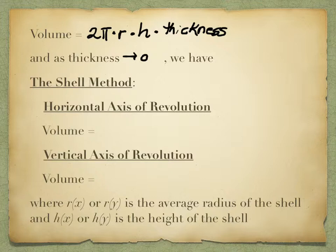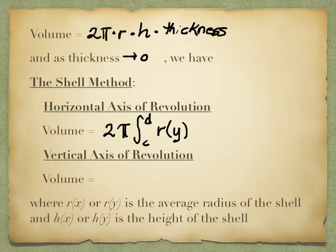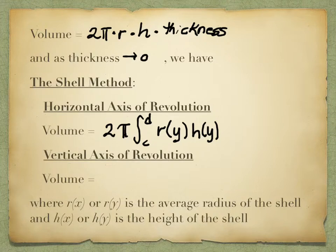It does matter if we're dealing with a horizontal or vertical axis. The formulas are very similar. We're going to pull that 2π out as a constant. We're going to integrate from c to d. We're going to have the radius in terms of y and the height in terms of y when the horizontal axis of revolution is used, and our thickness is dy.